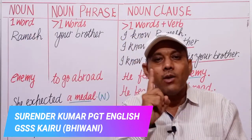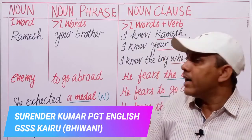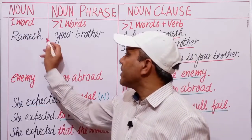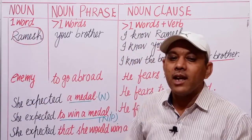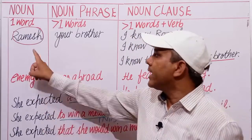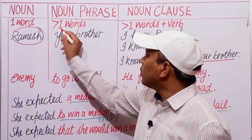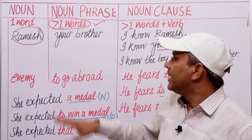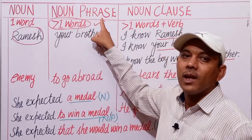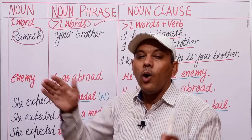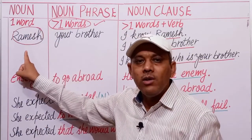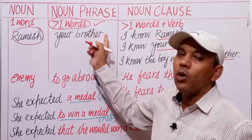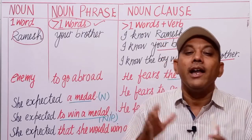If only one word acts as a noun, it is known as a noun. For example, 'Ramesh' — this is the name of a person and it acts as a noun. Now, if more than one word acts as a noun in a sentence, that is known as a noun phrase. Only one word or a compound noun is known as a noun, while a group of words is known as a noun phrase.